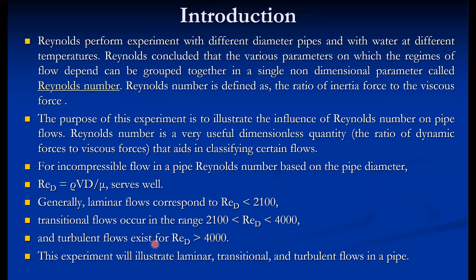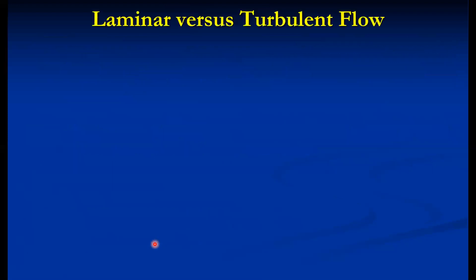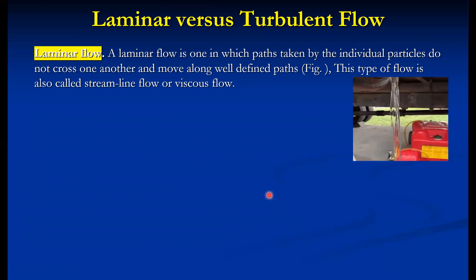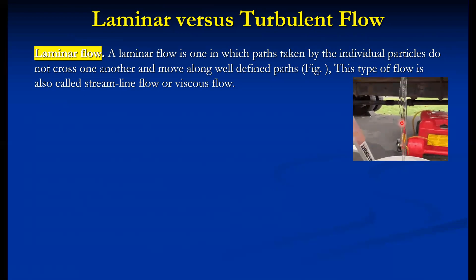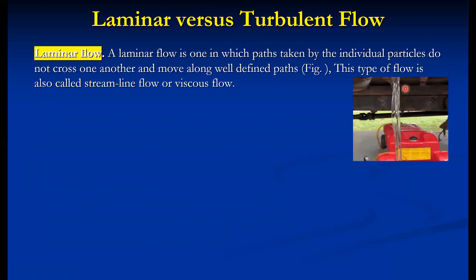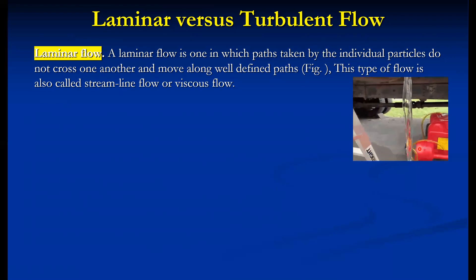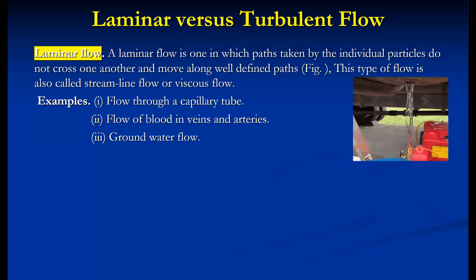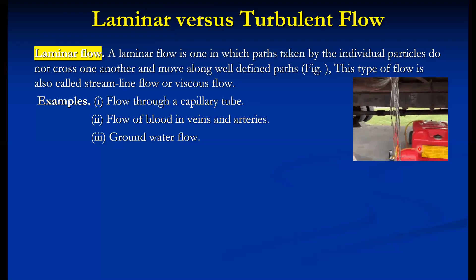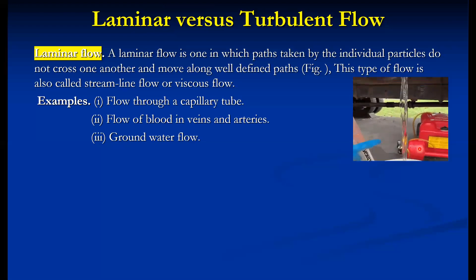This experiment will illustrate laminar, transitional, and turbulent flows in the pipe and validate them with the calculated Reynolds number. Laminar flow is one in which the paths taken by individual fluid particles do not cross — you cannot directly visualize the flow because particles do not cross their paths. They move along well-defined paths. Examples include oil flow, flow through capillaries, blood flow in veins, and groundwater flow.